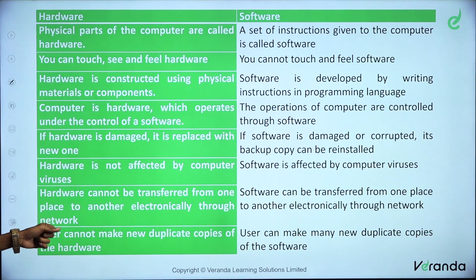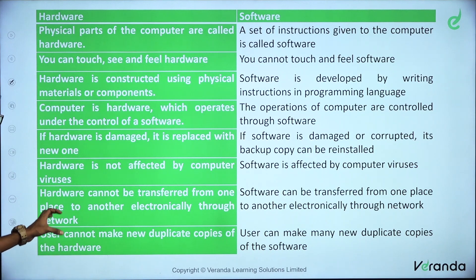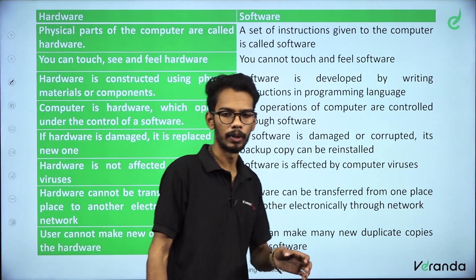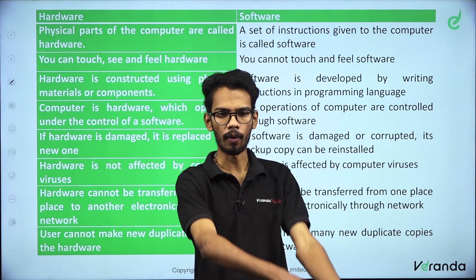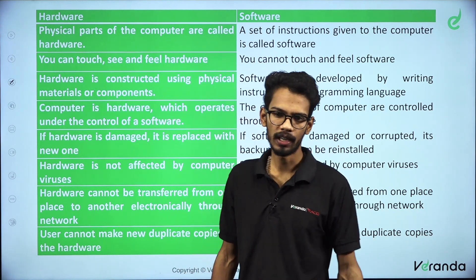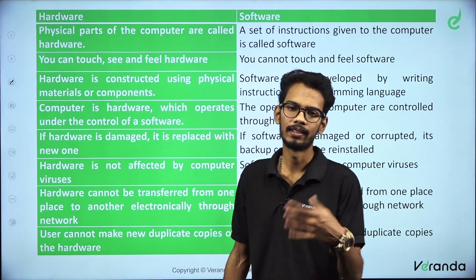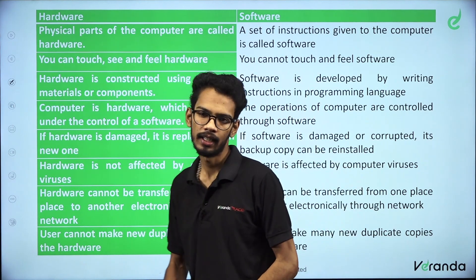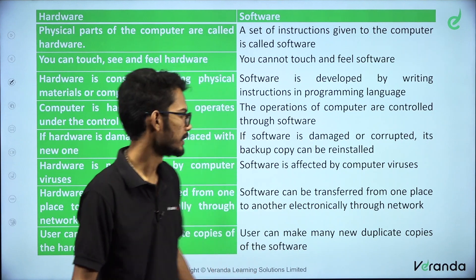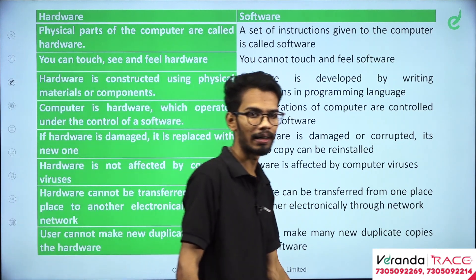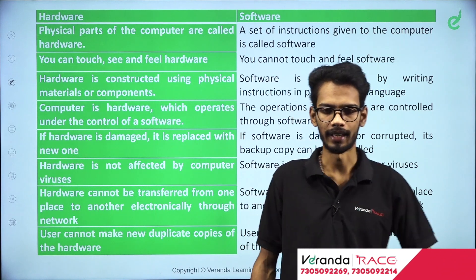Users cannot make new duplicate copies of hardware — one keyboard cannot be copied. But software can be duplicated easily with Ctrl-C and Ctrl-V. So those are the differences between hardware and software.